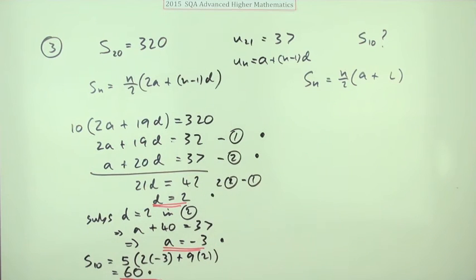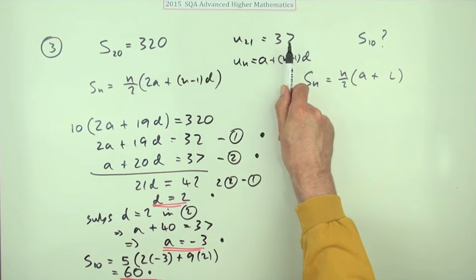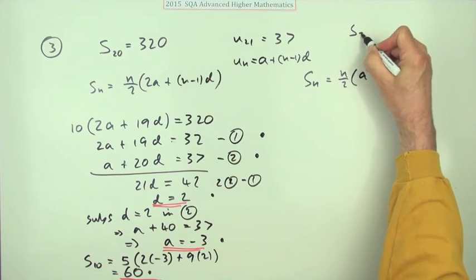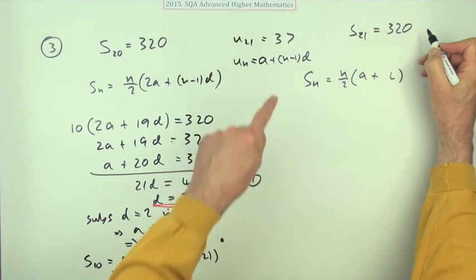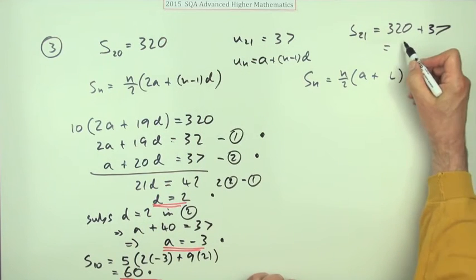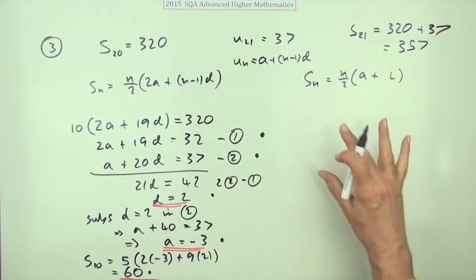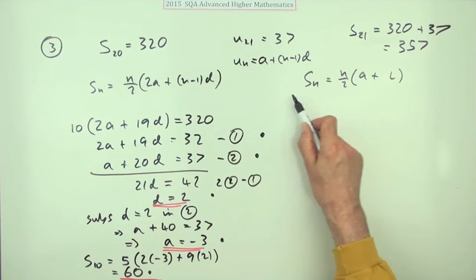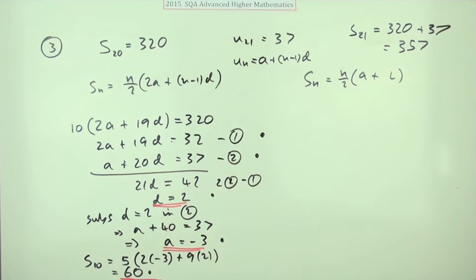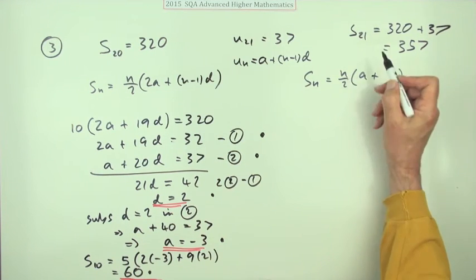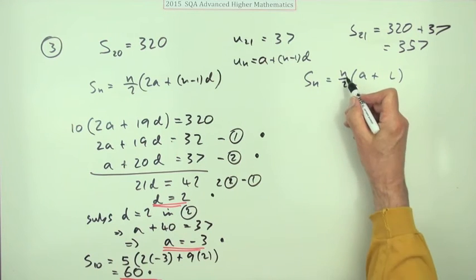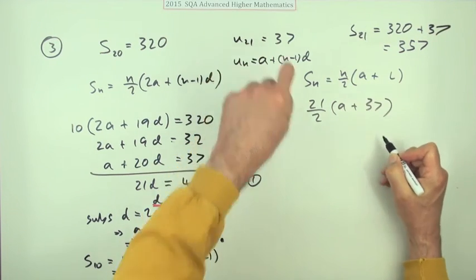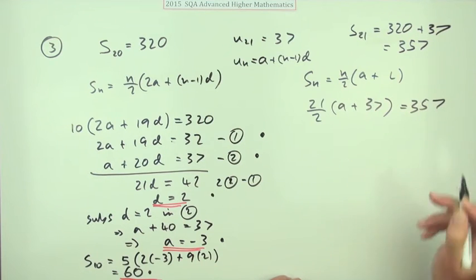Now for the other route: if the 21st term is 37 and we already know S_20 = 320, then the sum of the first 21 terms must be 320 + 37 = 357. Using the a+l formula with S_21 = 357: we know the sum, the number of terms, and the last term, so we can find a directly without simultaneous equations.